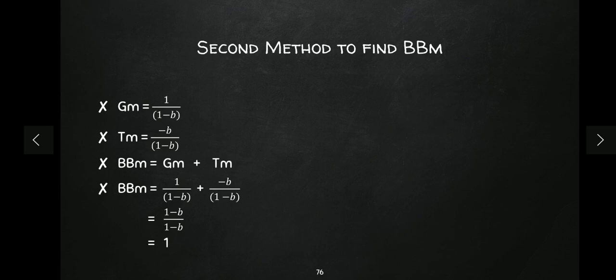So the value of the balanced budget multiplier is one — there are two ways to find this out. This means if the government is changing expenditure as well as taxes by the same rate, then national income will also change proportionally, and the value of the multiplier is one. I hope all of you have understood this concept. If you like the video, please give a thumbs up, share it with your friends, and keep subscribing to the channel. Thank you so much.